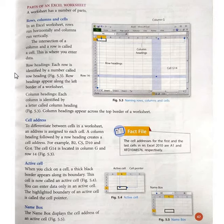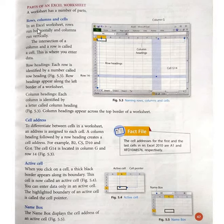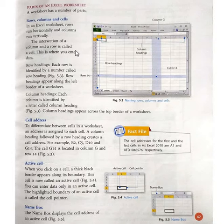A worksheet has a number of parts: rows, columns, and cells. In an Excel worksheet, rows run horizontally and columns run vertically. The intersection of a column and a row is called a cell. This is where you enter data.